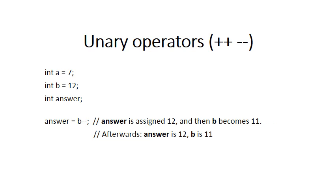The same applies to the minus-minus. In this example, b has the value 12, and then we say answer is assigned to b minus-minus. Because the minus-minus is after the variable, the assignment happens first. So answer takes on the value 12. After that, b is decreased by 1 to become 11. So after this expression, answer has the value 12, and b has the value 11.